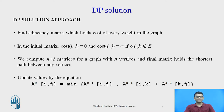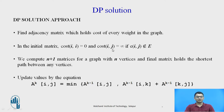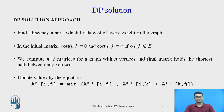So how does dynamic programming provide a solution to this particular problem? Firstly we find the adjacency matrix which holds the cost of every weight in the graph. In the initial matrix, the cost of vertex i to i — that is from a particular vertex to itself — will always be 0. If there is no edge between two particular nodes, say i and j, then we will mark it as infinity. Now we will compute n plus 1 matrices including the initial matrix, and the final matrix will hold the shortest path between any vertices.